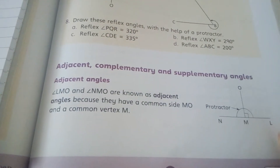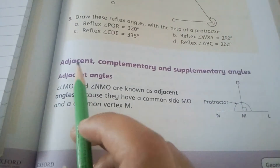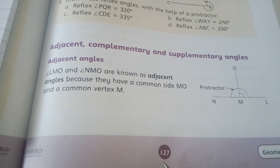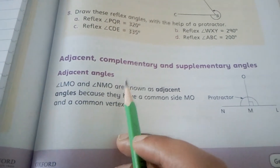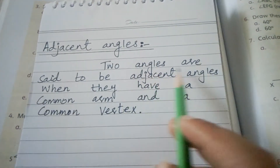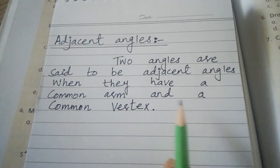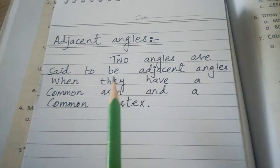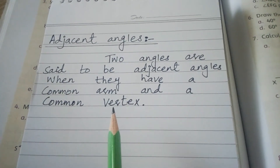Assalamu alaikum students, welcome back to online learning sessions. Our topic for today is adjacent, complementary, and supplementary angles, given on page number 127. First I will discuss adjacent angles. Two angles are said to be adjacent angles when they have a common arm and a common vertex. Two adjacent angles tab kahenge jib unki ek arm common hogi or unka vertex bhi common hoga.